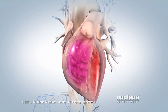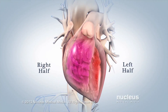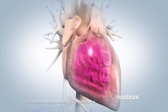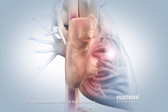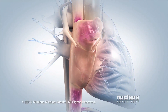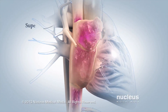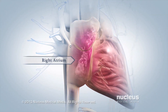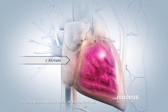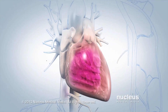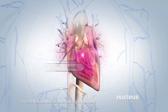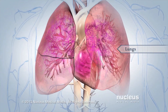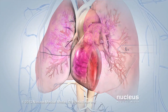Your heart is divided into left and right halves, which work together like a dual pump. On the right side of your heart, deoxygenated blood from your body's tissues flows through large veins, called the superior and inferior vena cava, into your right atrium. Next, the blood moves into your right ventricle, which contracts and sends blood out of your heart to your lungs, to gather oxygen and get rid of carbon dioxide.